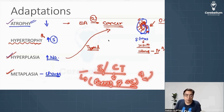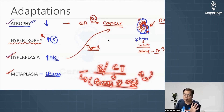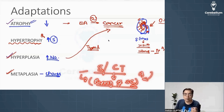Whenever there is a stress, the stem cells will undergo reprogramming. As a simple analogy: when exam comes you study a lot, and when the exam is finished you switch to party mode — that's an adaptation and change. Similarly, reprogramming of stem cells is responsible for development of metaplasia.